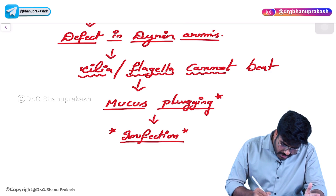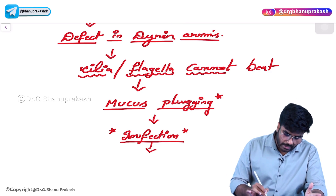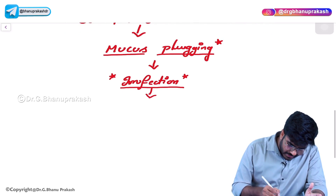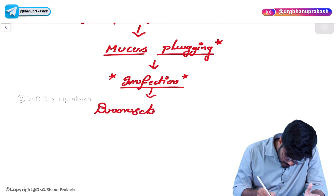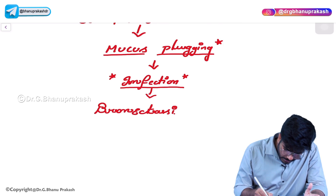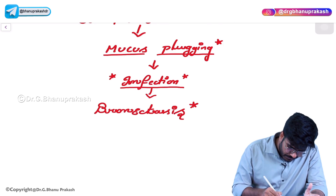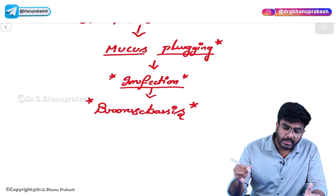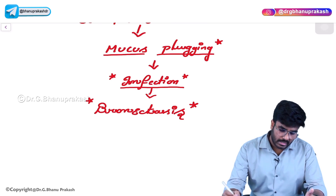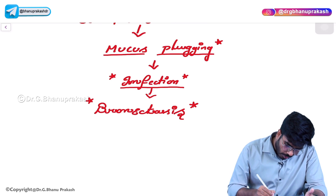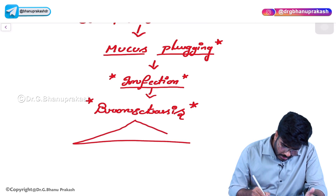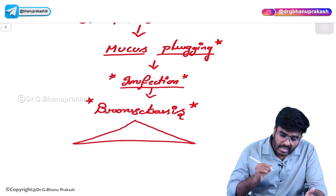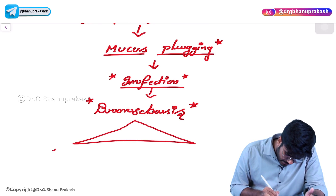The patient will have bronchiectasis as the respiratory pathology. Apart from bronchiectasis, Kartagener's patients will also suffer from sinusitis.